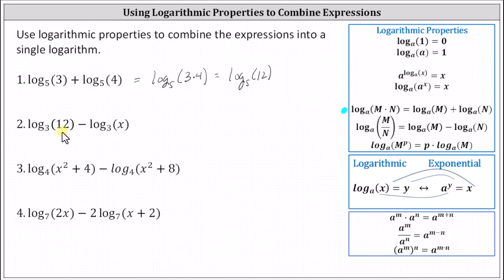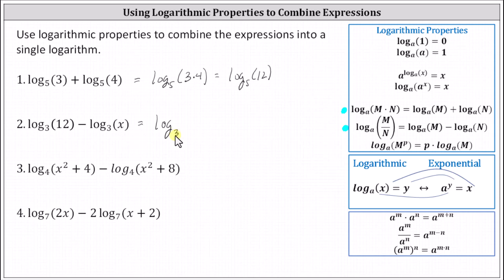Number two, we have log base three of 12 minus log base three of x. Because we have a difference, we should be thinking about the quotient property of logarithms: log base a of m minus log base a of n equals log base a of the quotient of m and n. Notice how both logarithms must have the same base. This indicates we can combine the difference as log base three of 12 divided by x.